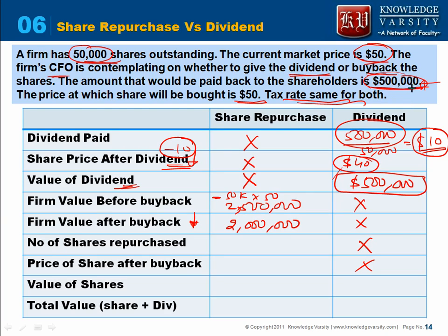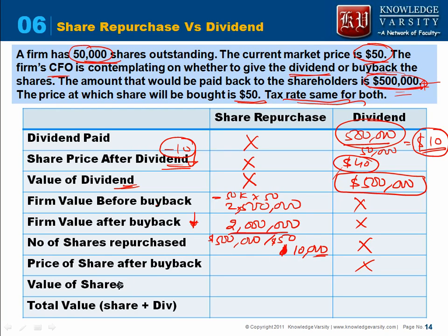The firm is buying back shares spending $500,000 at $50 per share. Dividing $500,000 by $50 gives us 10,000 shares repurchased. So the firm buys back 10,000 shares.